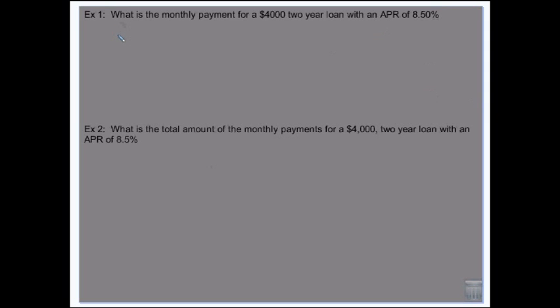But that's $45.46 per $1,000. So we have to take that $45.46 and multiply it by 4 because we have $4,000. So $45.46 times 4 is $181.84 monthly.